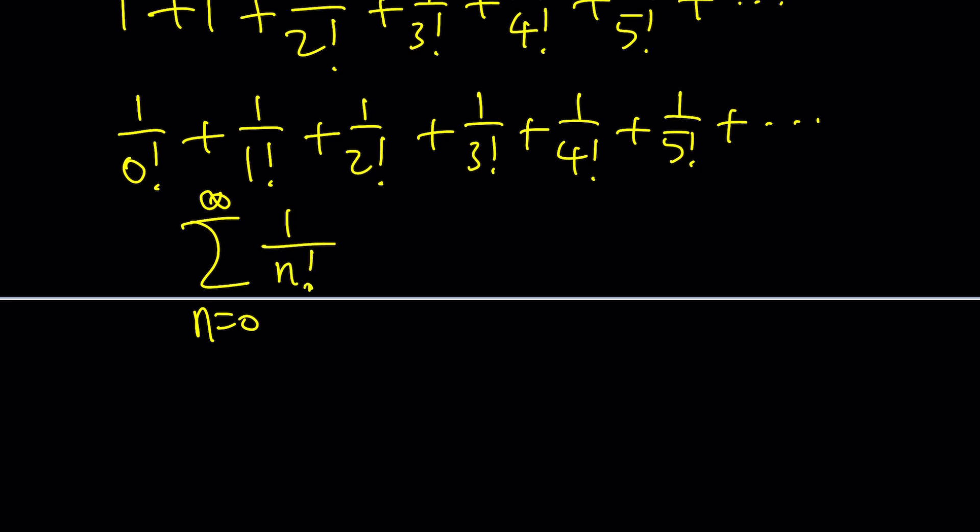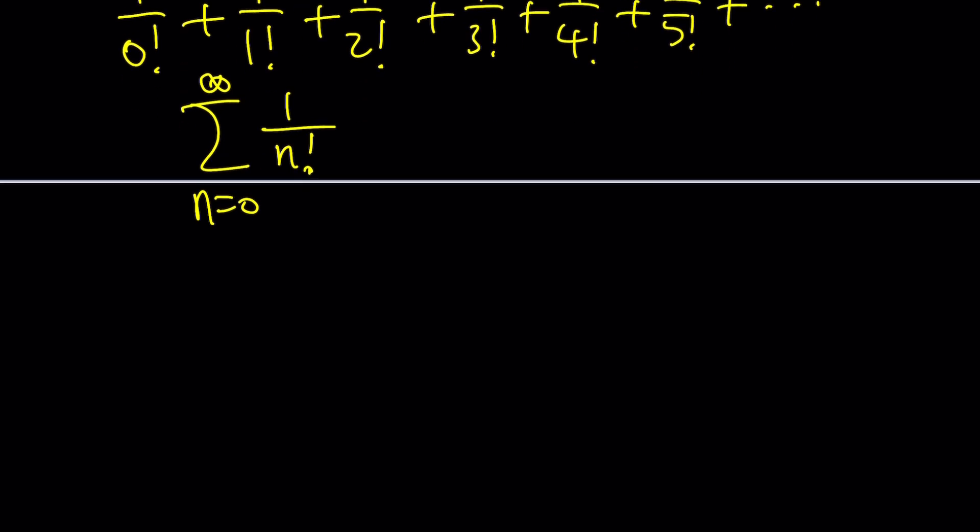Now how do we evaluate the sum? You either memorize it or you do know another sum that looks like this which is the following: 1 plus x plus x squared over 2 factorial plus x cubed over 3 factorial plus x to the 4th over 4 factorial.